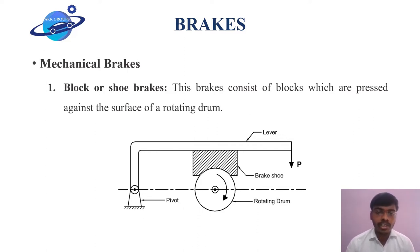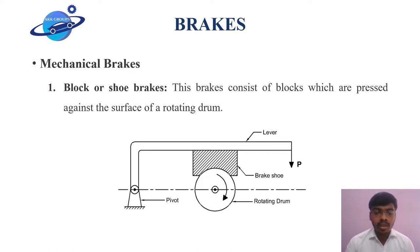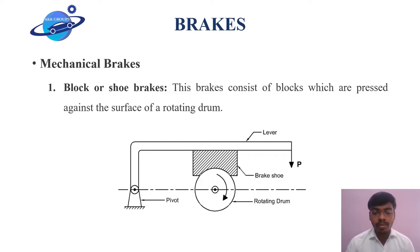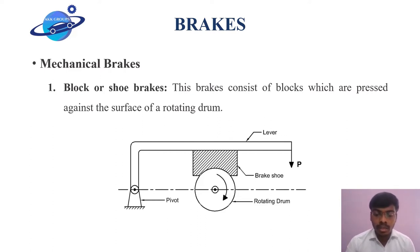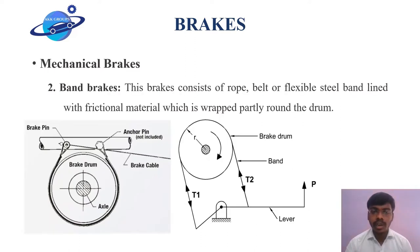Let us have a clear look at the first part, that is block or shoe brakes. It consists of a block or a shoe which is pressed against the rim of a revolving wheel. The block is made up of softer material than that of the rim. The friction between the block and the wheel causes a tangential braking force to act on the wheel, which resists the rotation of the wheel.